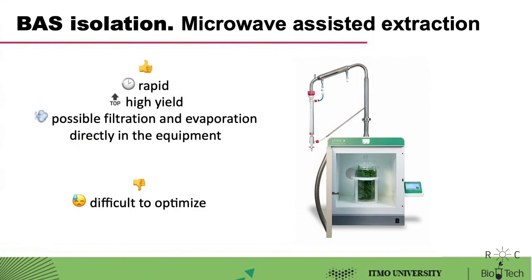Another way to intensify extraction is exposure to microwaves. The microwave extraction system allows significantly reducing extraction time while increasing the yield. Modern equipment for microwave extraction makes it possible to minimize solvent consumption and even carry out subsequent evaporation of the solvent. A disadvantage is the tricky optimization of extraction parameters, because destruction of molecules can occur under the action of the microwave field, and the temperature rises during the process, to which organic substances can be sensitive.